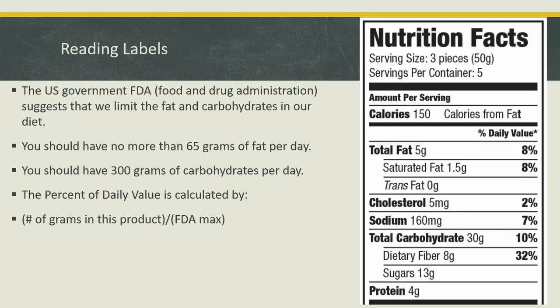You may notice that there are percentages along the right hand side of the food label. These percents tell you how much of your daily value this food provides. The U.S. Government Food and Drug Administration suggests that we limit how much fat and carbohydrates we have — no more than 65 grams of fat per day or 300 grams of carbohydrate per day. We can calculate the percent of daily value by taking the number of grams in this food divided by the FDA max.